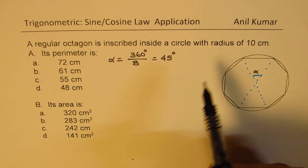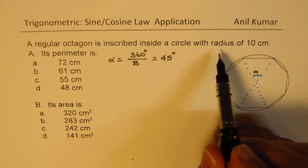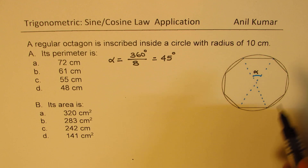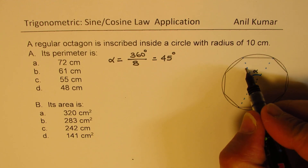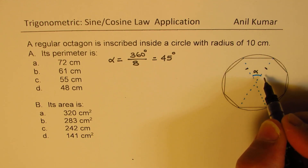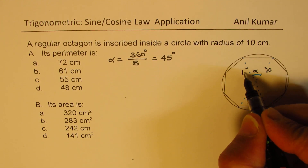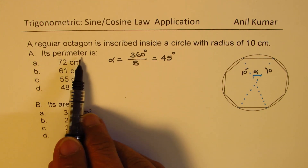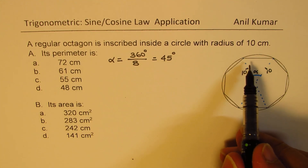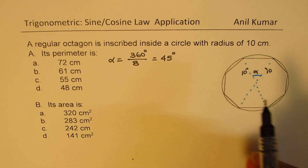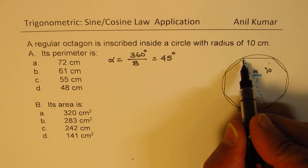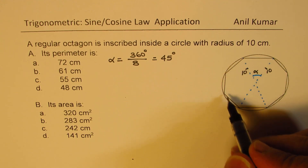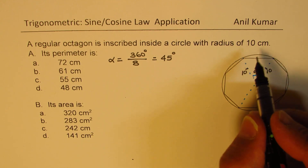We are given that the octagon is inscribed in a circle of radius 10 centimeters. That means the two sides of each triangle are 10 centimeters each. To find the perimeter, we need to find one side of the octagon, and then multiply that by 8 to get the perimeter.